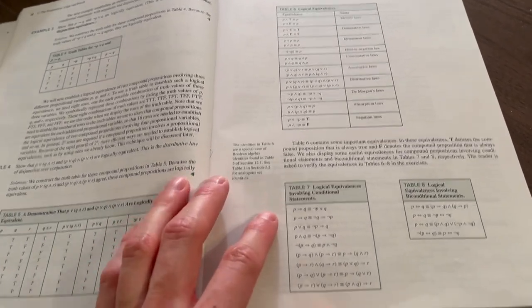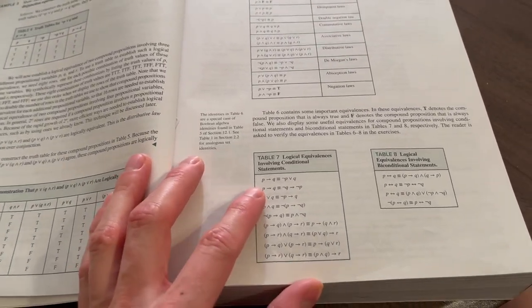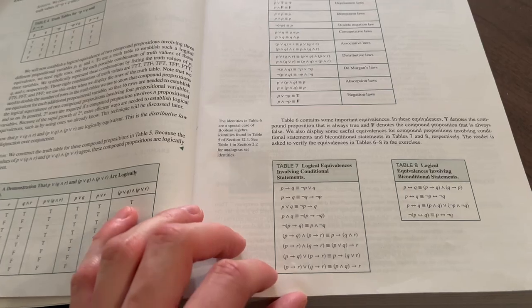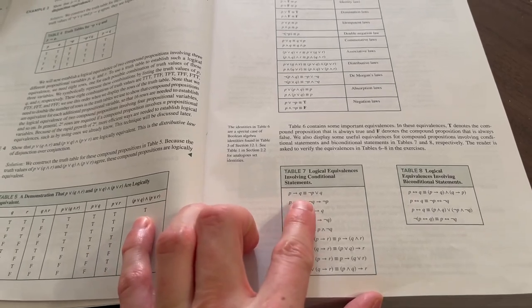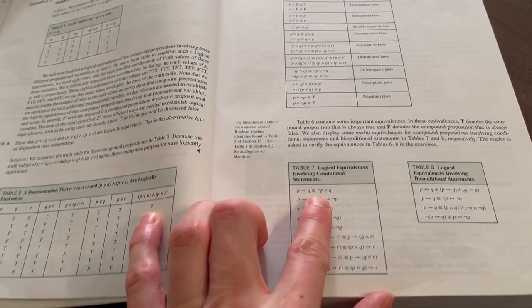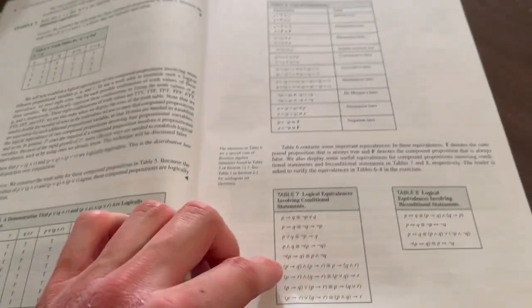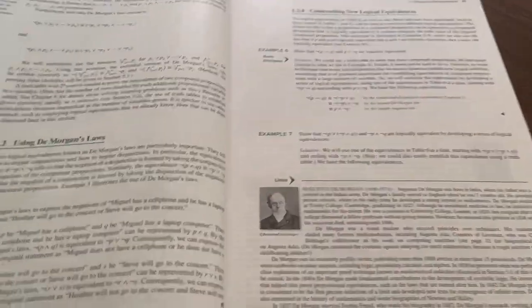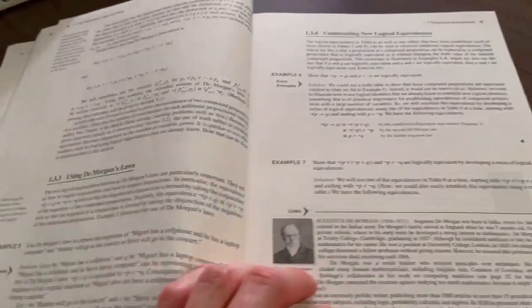And there are different ways to think about conditionals. We can think about various equivalencies. So, for example, if P, then Q is logically equivalent to not P or Q. So sometimes that's called an implication. So using De Morgan's laws, constructing new logical equivalencies. And there's a lot more here.